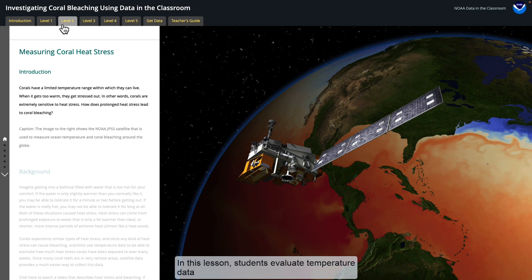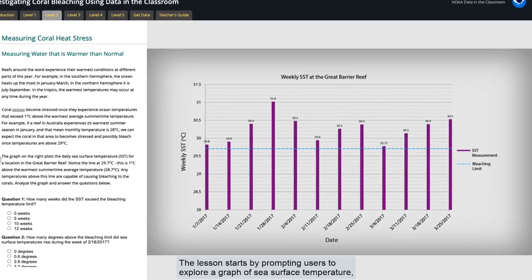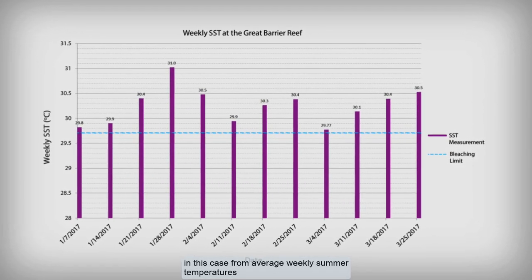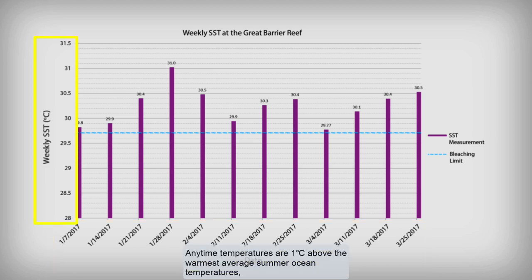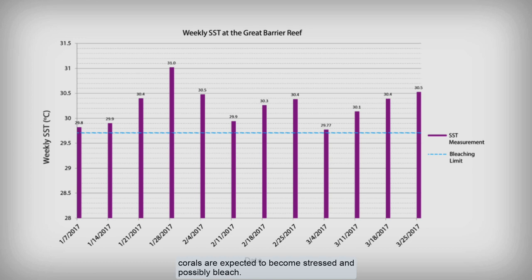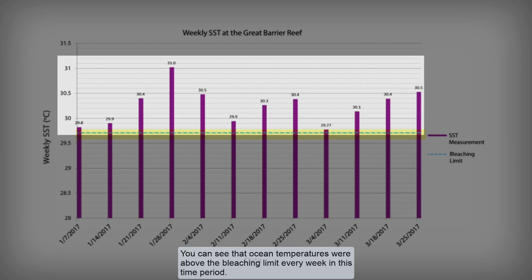In this lesson, students evaluate temperature data to explore the effect of heat stress on the health of corals. The lesson starts by prompting users to explore a graph of sea surface temperature — in this case, average weekly summer temperatures from 2017 on the Great Barrier Reef. Time in weeks is on the x-axis, sea surface temperature on the y-axis. Any time temperatures are 1 degree Celsius above the warmest average summer ocean temperatures, corals are expected to become stressed and possibly bleach. This is called the bleaching limit, shown as the blue dashed line.